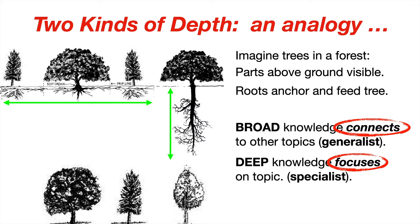Botanists have actually figured out that trees can communicate as their roots are close, through chemical and biological communications. Roots that go deeply and don't connect to many other trees are sort of like a specialist's knowledge — they know more and more, but not about a broad area.